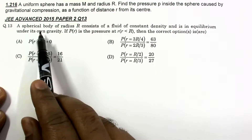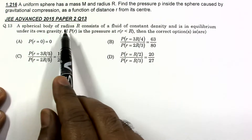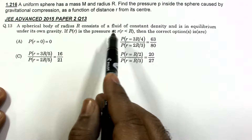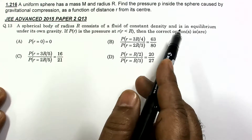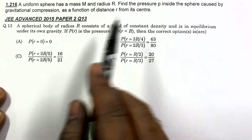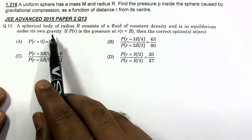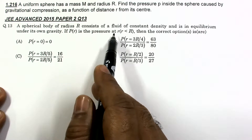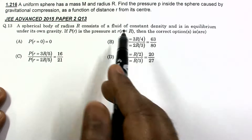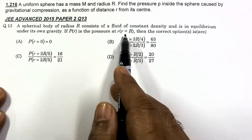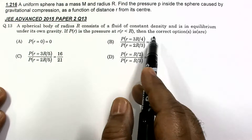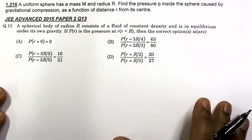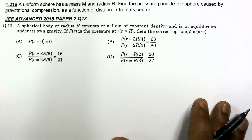The JEE 2015 question states: a spherical body of radius capital R consists of a fluid of constant density and is in equilibrium under its own gravity. If p(r) is the pressure at distance r which is less than capital R, then find the correct option. Let us analyze the situation.